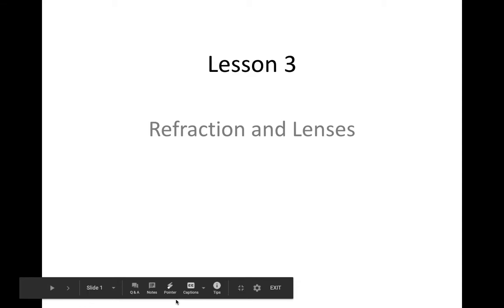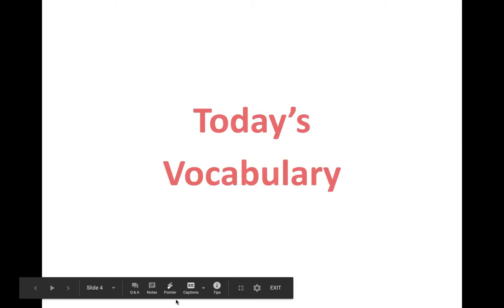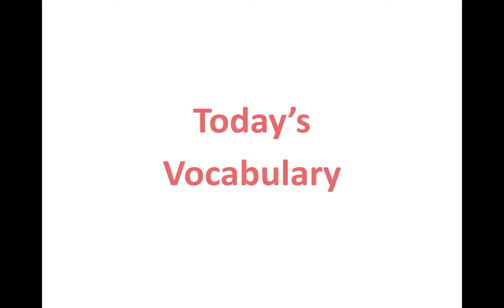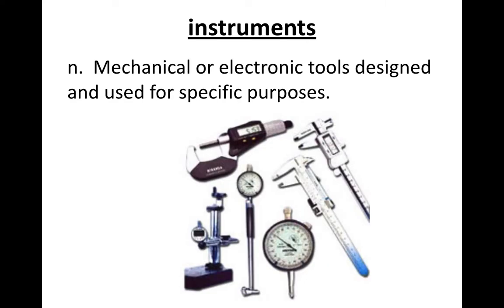Lesson three: refraction and lenses. Today's vocabulary. Binoculars: a tool made of a pair of tubes with lenses or curved pieces of glass at both ends that allow someone to better see something that is far away. Instruments: mechanical or electronic tools designed and used for specific purposes.